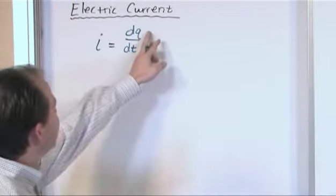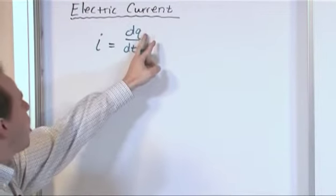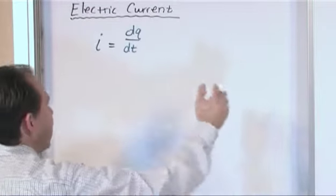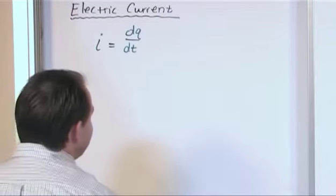So for that to happen they have to be moving. And that's why it's dq/dt, the rate of change of charge with respect to time. Either charge is going to be flowing into something or out of something and so that charge is going to be changing. And that's why we define it this way.